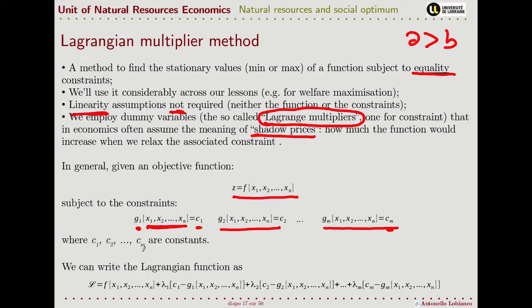Given this structure of our problem, what we can do is write a new function that we call the Lagrangian. This function is made of the original objective function plus, for each constraint, a new dummy variable — the Lagrange multiplier — that multiplies the difference between the constant and the functional form of that constraint. This applies for the first constraint, the second constraint, and for any other constraints that we may have in our model.